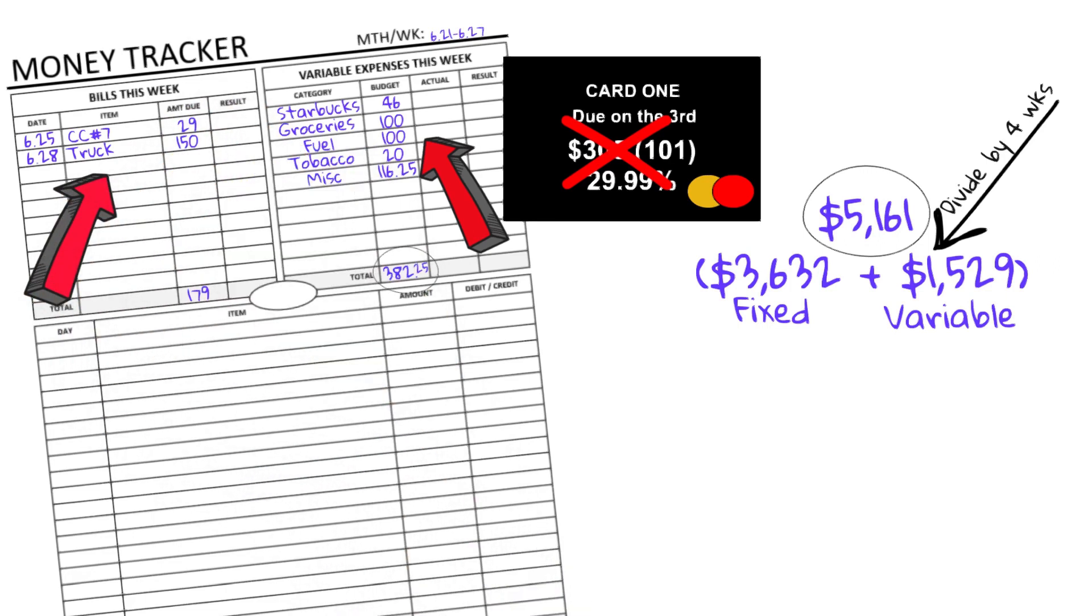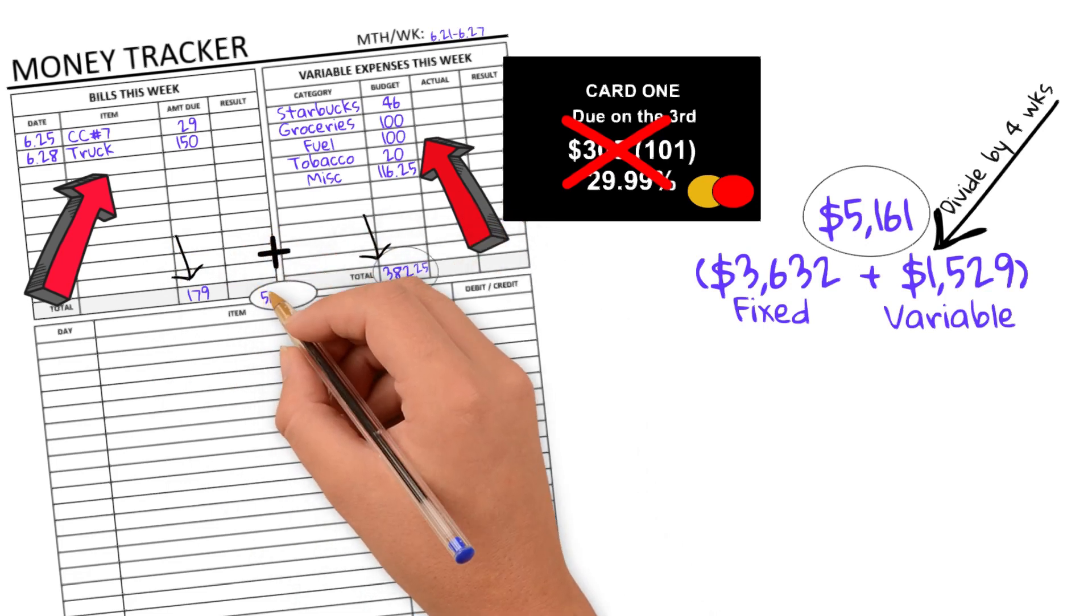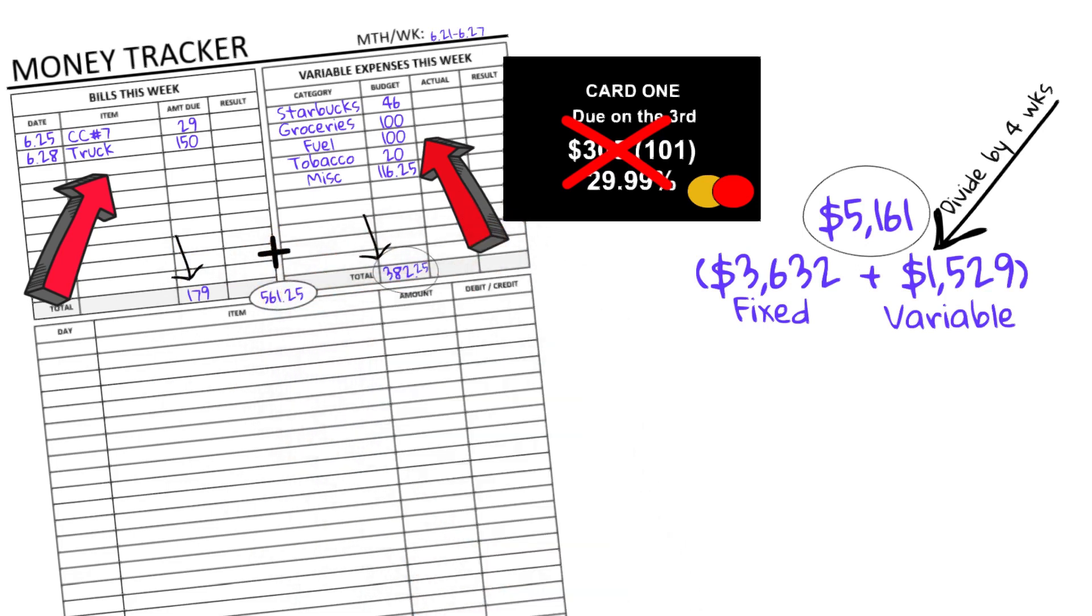And this week, there's not much. We're at the end of the month. So we don't get hit with the stuff at the end of the month. It's usually the first of the month where we get hit and hit hard. So in the circle on the money tracker, I total the two numbers, the bills due and my variables. And I get my dollar goal for the week.